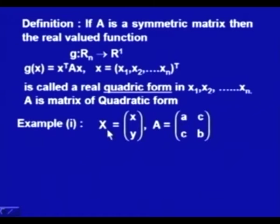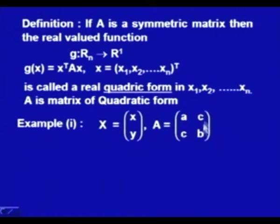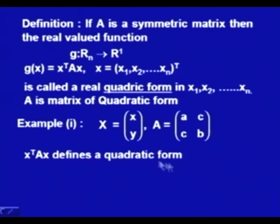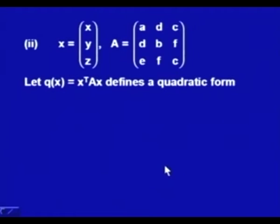For example, if we have a two-dimensional vector x = [x, y]ᵀ, then A is a symmetric matrix with entries A, B on the diagonal and C, C on the off-diagonal terms. Then xᵀAx defines a quadratic form, which one can check easily. In the second example, we have a three-dimensional column vector x, and A is the symmetric form with entries d, c, and f symmetrically placed.